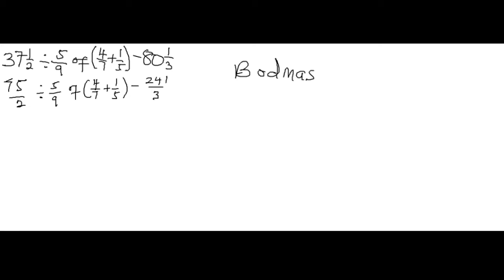According to BODMAS, we tackle the one in the bracket first. So inside the bracket we have 4/7 plus 1/5. We find the LCM of 7 and 5, which gives us 35. Seven goes into 35 five times: 5 times 4 is 20. Five goes into 35 seven times: 7 times 1 is 7. So the bracket gives us 20 plus 7 over 35. That is our main priority right now.